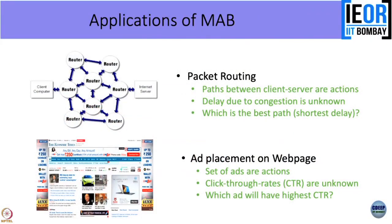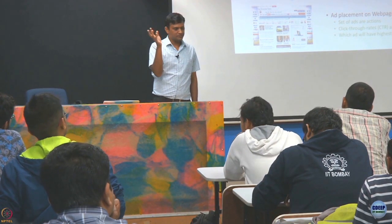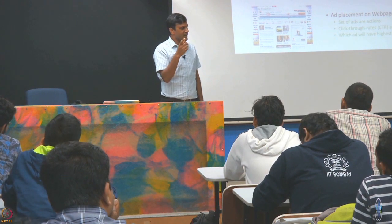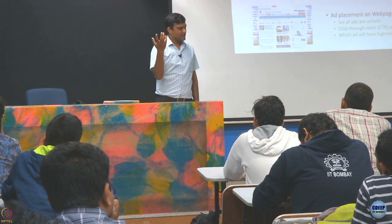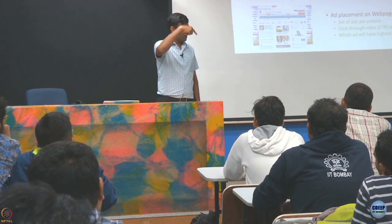There are many other applications. From a communication background it could be packet routing — finding the best path from source to destination. Say you are going from home to office with three or four route options. The travel time depends on congestion, weather, and other factors. You have to figure out which is the best route — the one with the smallest travel time. Can you model this as a multi-armed bandit problem?